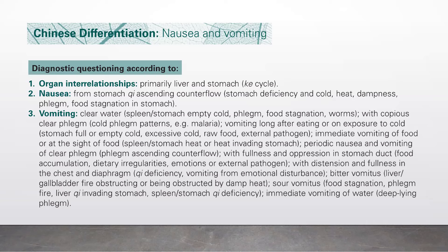Bitter vomitus: liver, gallbladder fire obstructing or being obstructed by damp heat. Sour vomitus: food stagnation, phlegm, fire, liver chi invading the stomach; spleen, stomach chi deficiency; immediate vomiting of water — deep-lying phlegm.